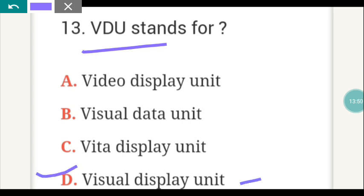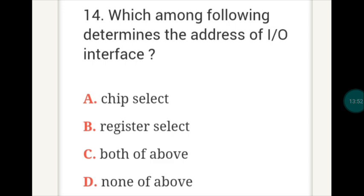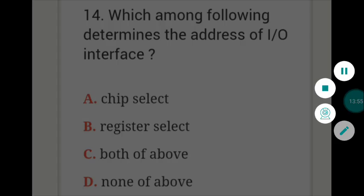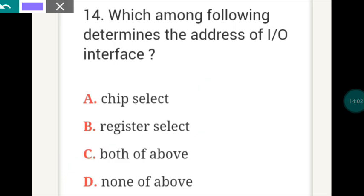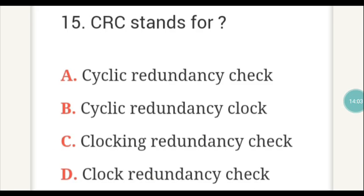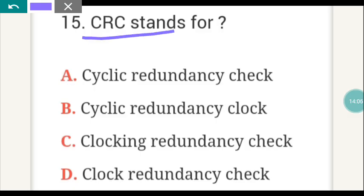Which among the following determines the address of input-output interface? The answer is C — Chip Select and Register Select. CRC stands for A — Cyclic Redundancy Check.